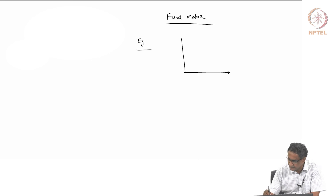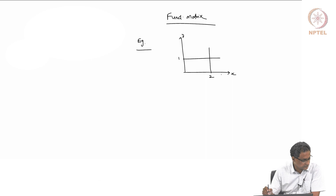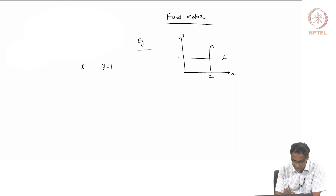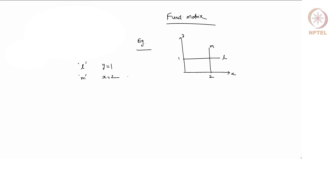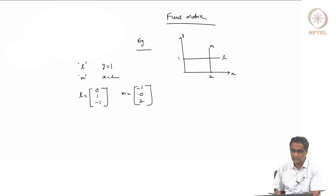Suppose I have the x-y plane with two lines. Let us say this coordinate is 1 and this is 2. This line is l and this line is m. As far as l is concerned, its equation is y equal to 1, and for line m, its equation is x equal to 2. In terms of the homogeneous representation, l is l1*x + l2*y + l3 = 0, so we can take it as 0, 1, minus 1 — valid up to a scale factor, so 0, minus 1, 1 also works. And m is minus 1, 0, 2, because x equals 2.